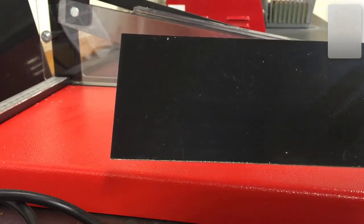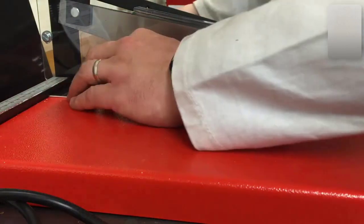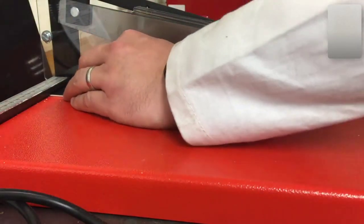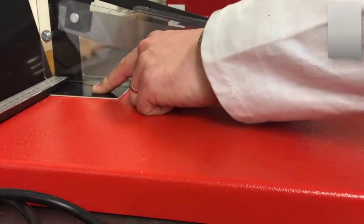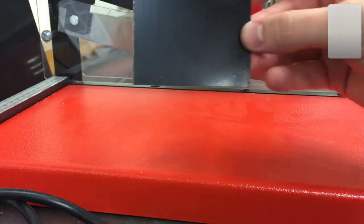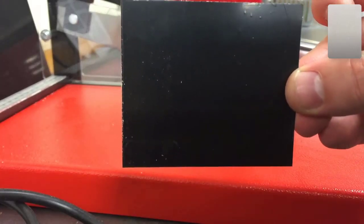We're going to cut the PCB down to size using this special guillotine. Now that we've got our board the right size, we can move on to exposing it to UV light.